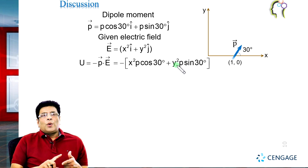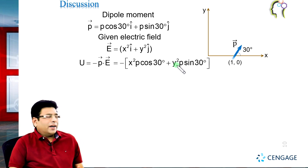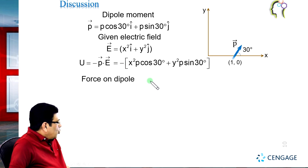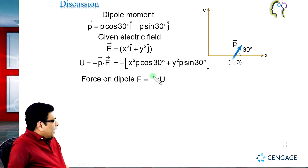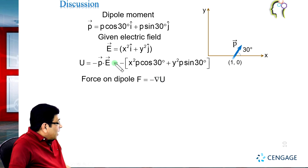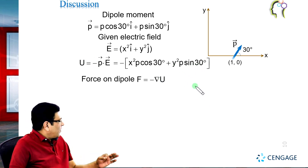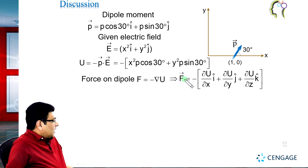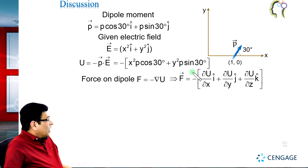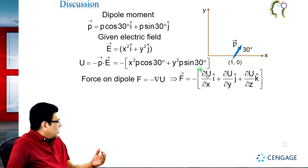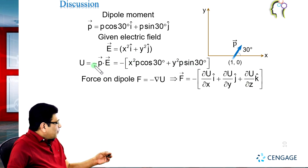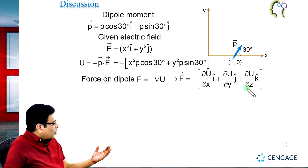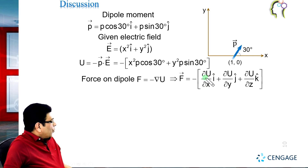Now, coming to the force: the force on the dipole is equal to the negative gradient of the potential energy. So we can write F-vector equal to the negative gradient of U. The negative gradient means taking the partial derivative of the potential energy. We write F-vector equal to minus del-U/del-x i-cap plus del-U/del-y j-cap.